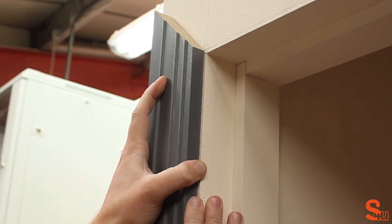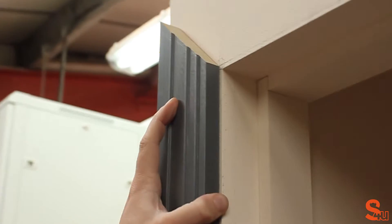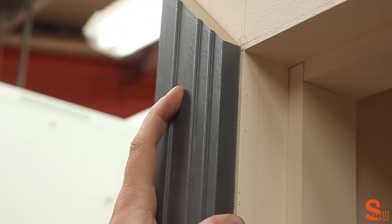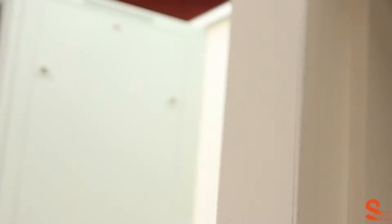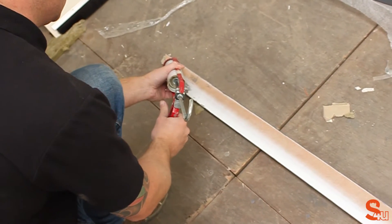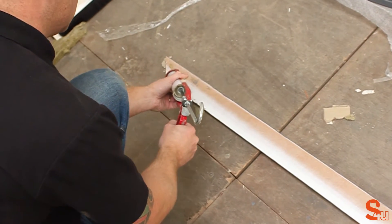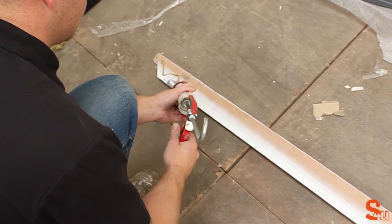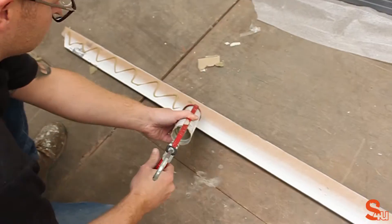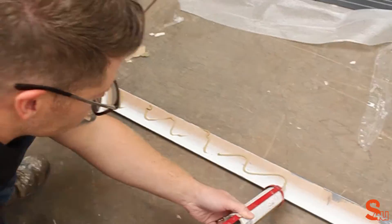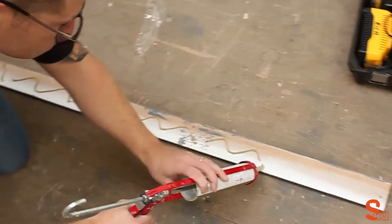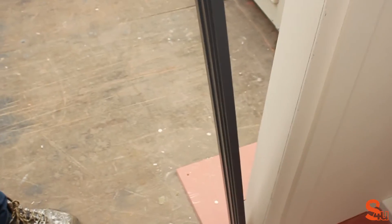Run up the architrave to the 4mm line to make sure that it fits. And then we can apply our adhesive. You can use squiggles here to cover more surface area. Some people use blobs and some people just use lines, but we find that squiggles is generally a better way to go about it.